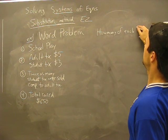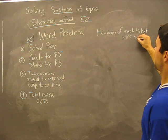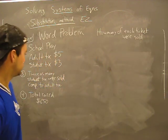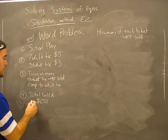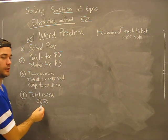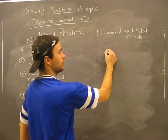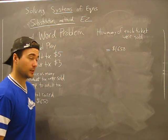Just like any word problem, we always want to start with what we know. We know that a total raised equals $16.50. So translate that to math writing. Something plus something equals $16.50.